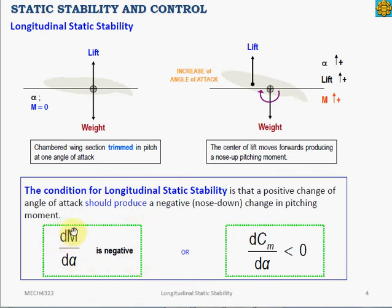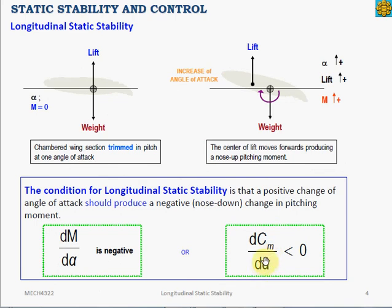Mathematically speaking, any change in the moment with respect to change in angle of attack must be negative. Since we often describe aircraft forces and moments in terms of coefficients, we state this as: the change in the aircraft's moment coefficient with respect to the change in angle of attack, DCM/Dα, must be less than zero.